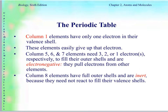Column one elements have only one electron in their valence shell. Column two will have two electrons, column three will have three, and so on. These elements can easily give up electrons when they only have one. Column five, six, and seven elements need three, two, or one electrons to fill their outer shells. These elements are electronegative — they pull electrons from other elements. Column eight are the noble gases; they are inert and not reactive at all.